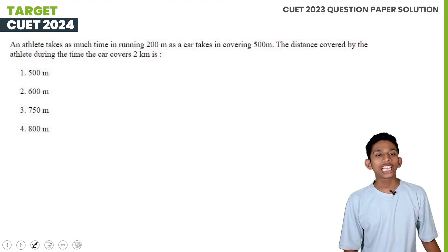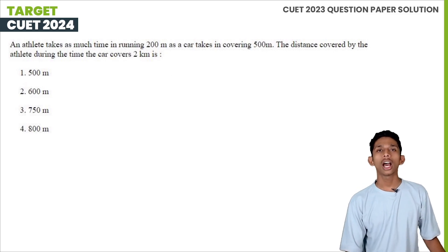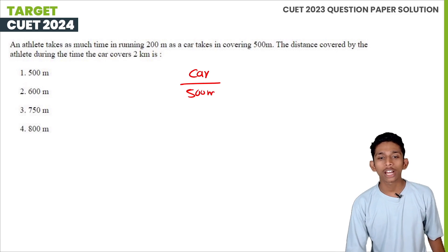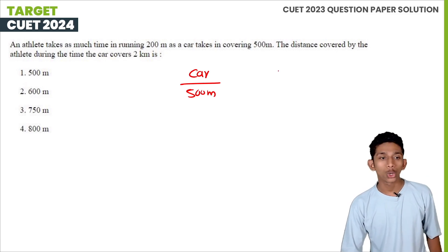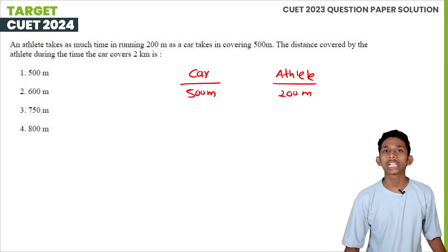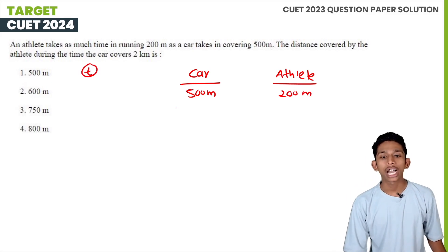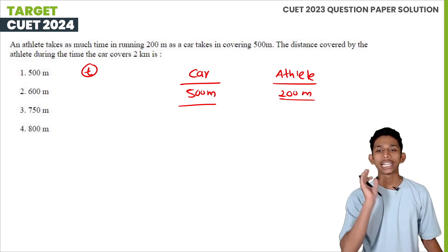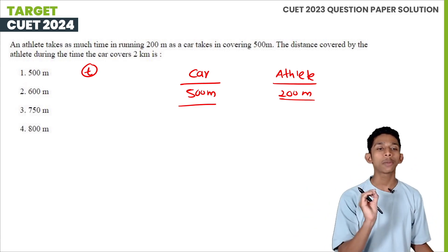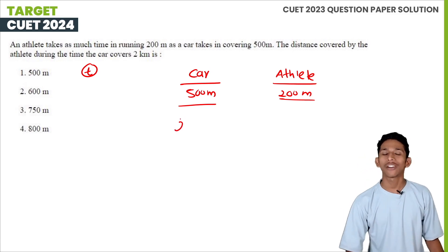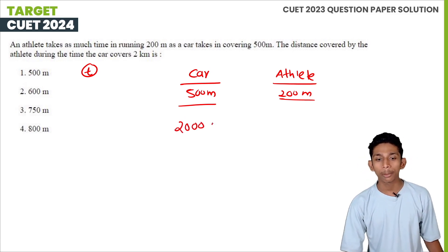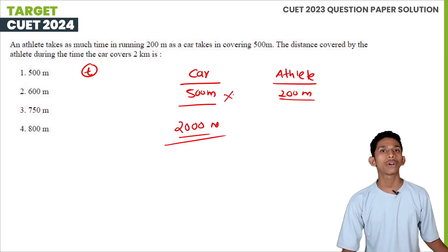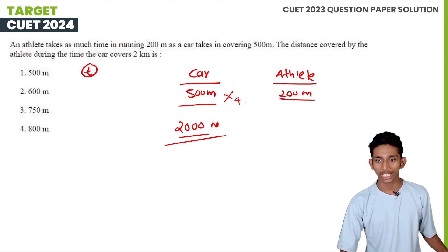An athlete takes as much time in running 200m as a car takes in covering 500m. So the ratio of athlete speed to car speed is 200:500 = 2:5. The distance covered by the athlete during the time the car covers 2km (2000m): athlete covers 2000 × (200/500) = 800m.